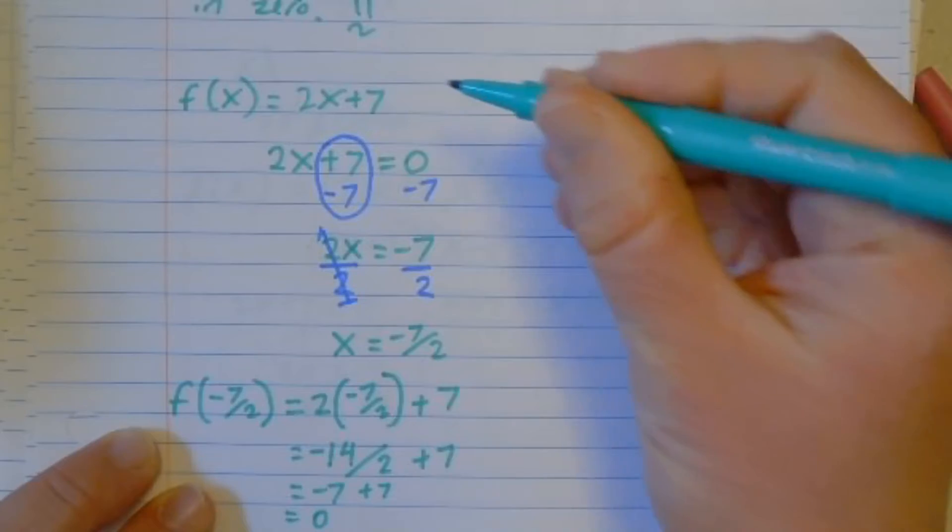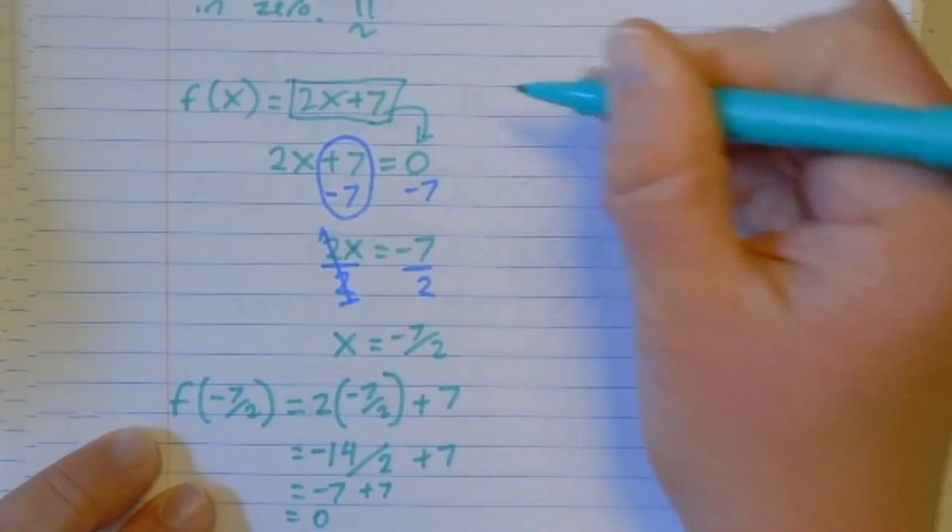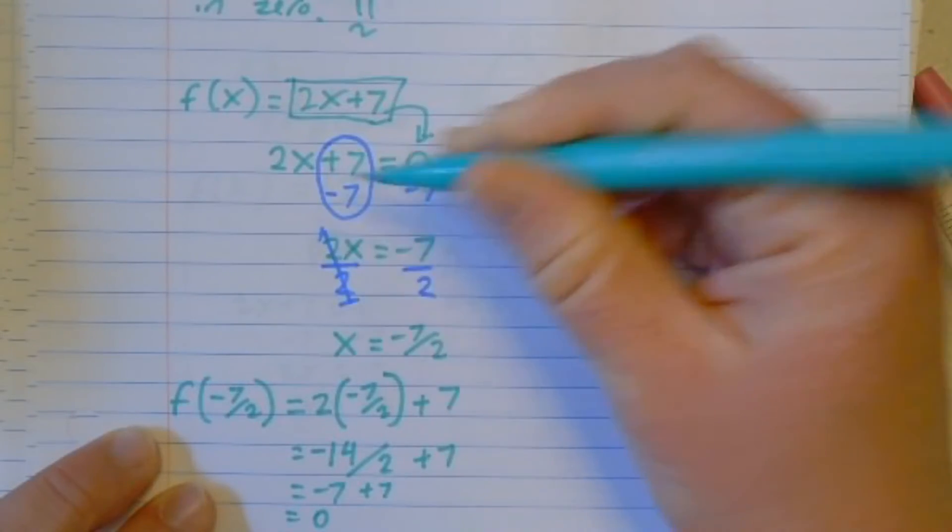To get that number, I took the function and I set it equal to 0, and then I solved it for x.